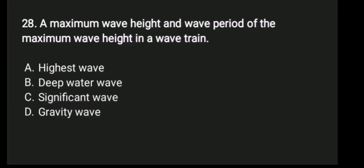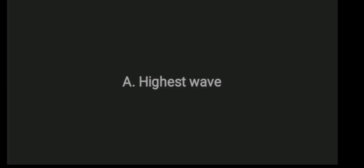28. A maximum wave height and wave period of the maximum wave height in a wave train. A. Highest wave, B. Deep water wave, C. Significant wave, D. Gravity waves. Answer: A. Highest wave.